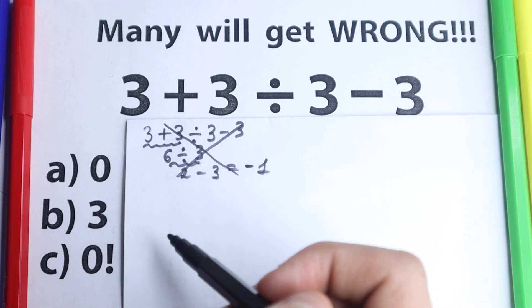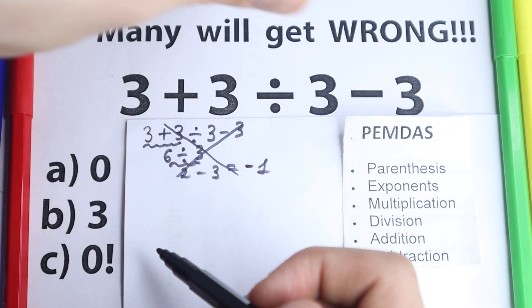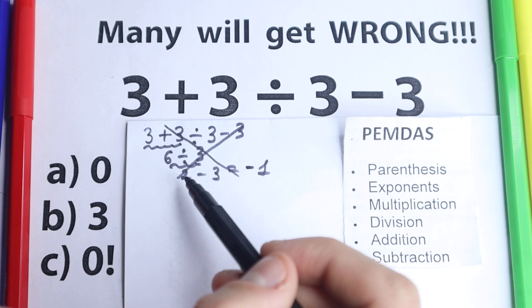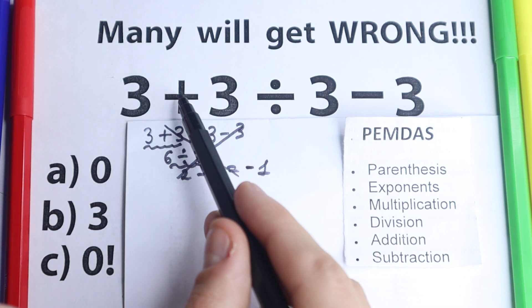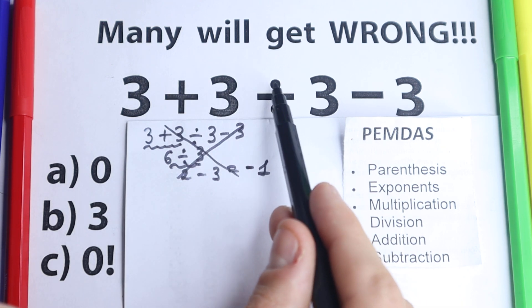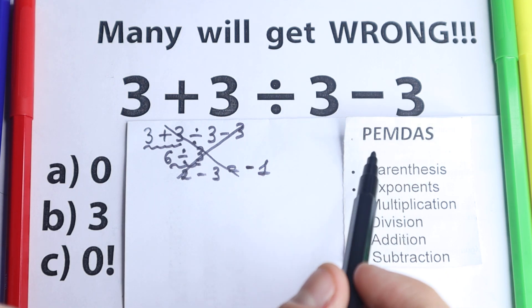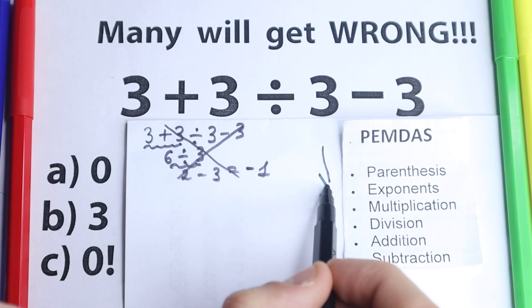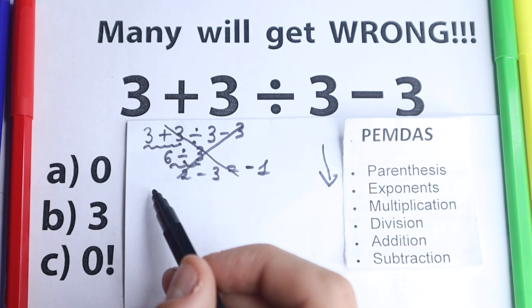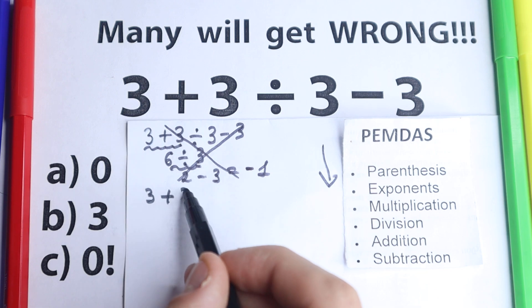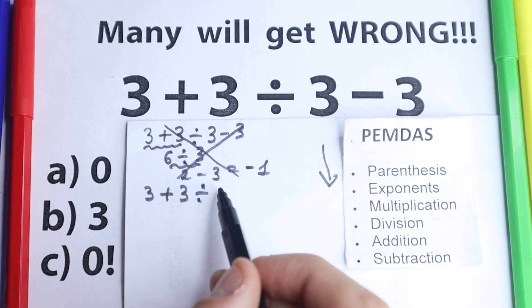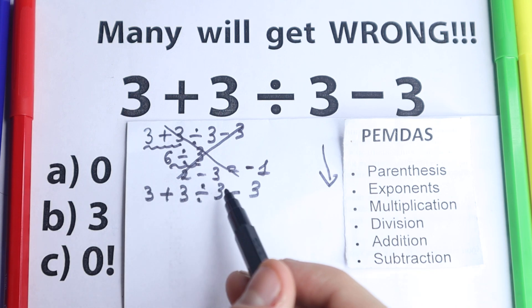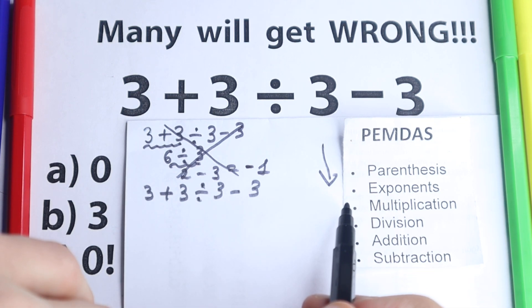For this question I have this PEMDAS order. Let's solve it according to the correct order of operations, because as you can see, this is absolutely wrong order of operation from left to right. We cannot go addition then division. I want to show you this here with PEMDAS. This PEMDAS works from top to bottom. Let me rewrite this question: we have 3 plus 3 divided by 3 minus 3. Let's solve it according to PEMDAS.